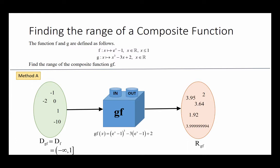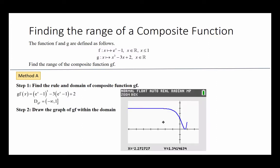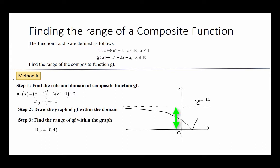So how does this work mathematically? Step 1: we find the rule and domain of the composite function gf first, as shown on the screen. Next, we draw the graph of gf within the domain that we have found. You can use your GC to help you sketch this graph. From the graph, we can easily see what the range of this composite function is — in this case, going from 0 to 4.